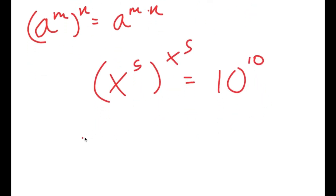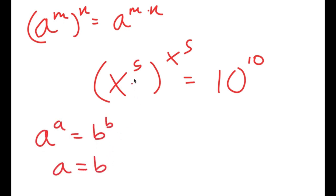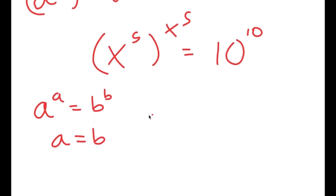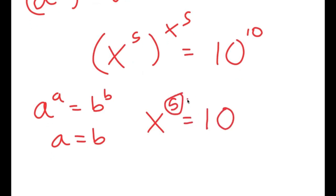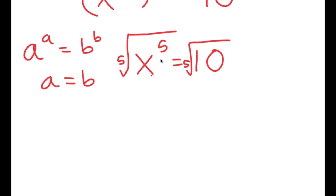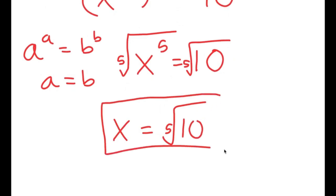My final property of exponents is that if I have something in the form a to the power of a equals b to the power of b, this means a equals b. So in this case, x to the power of 5 equals 10. Now to solve this, we need to get rid of the power of 5 by taking the fifth root on both sides. The fifth root of x to the power of 5 is x, so x equals the fifth root of 10. This is my solution.